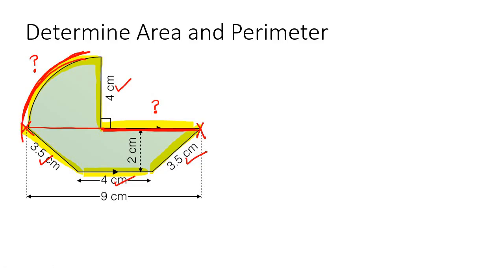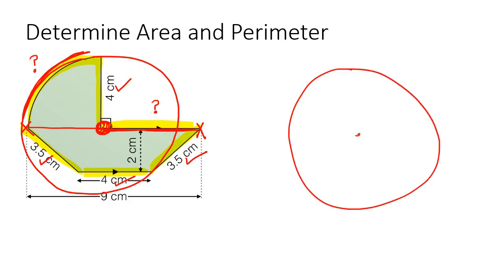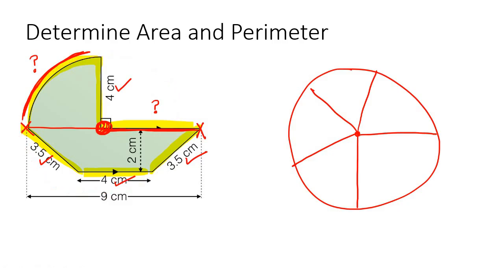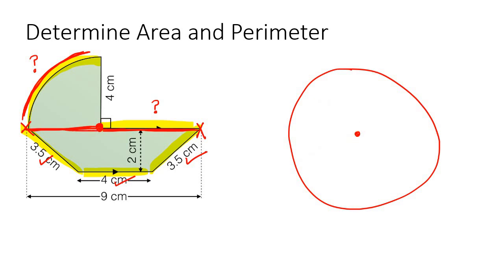Now if you look at this part here, this is a circle. So if I had to complete the circle, this is the center of the circle. When you have a circle, the distance from the center to the outside is the same no matter where you look — it's called the radius. We can see that the radius of the circle, from the center going out, is 4 centimeters. So the radius is 4, which means this length here would also be 4 centimeters.